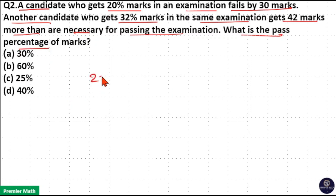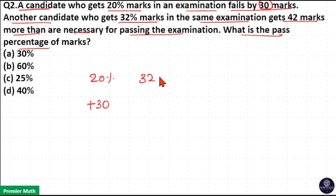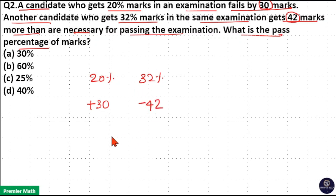One candidate gets 20 percentage marks in an examination but he fails by 30 marks. That means he needs 30 more marks to pass this examination. Another candidate gets 32 percentage marks in the examination but he gets 42 more marks than the pass mark.